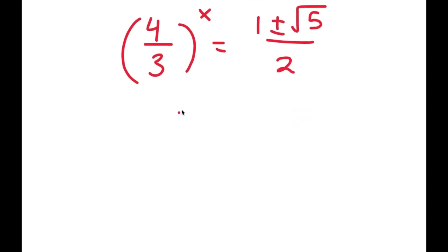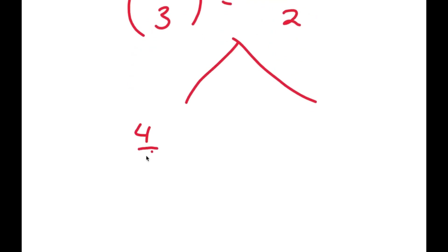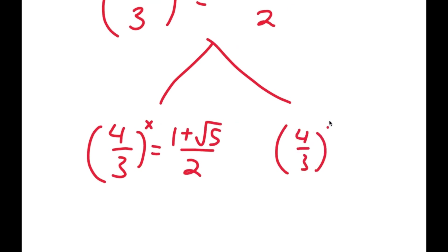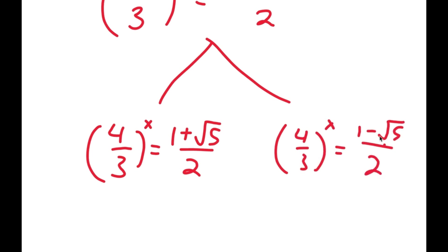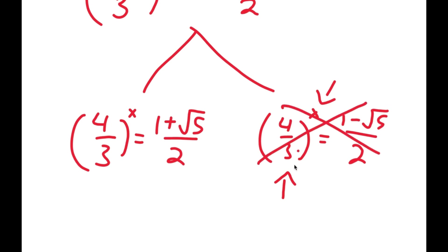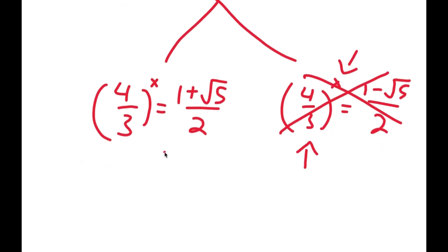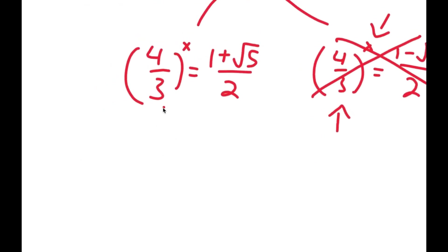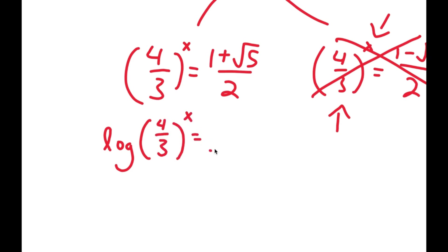This gives me two equations. I get 4 over 3 to the power of x is equal to 1 plus the square root of 5 over 2, and I get 4 over 3 to the power of x is equal to 1 minus the square root of 5 over 2. Now 1 minus the square root of 5 is a negative number, and a positive base raised to any power cannot equal a negative number, so there's no solution to that equation. To solve the valid equation, I'm going to take the log on both sides: log of 4 over 3 to the power of x is equal to log of 1 plus the square root of 5 over 2.